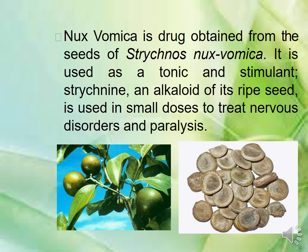Nux vomica is a seed-based drug obtained from the seeds of Strychnos nux-vomica. It is used as a tonic and stimulant. Strychnine, an alkaloid from its ripe seeds, is used in small doses to treat nervous disorders and paralysis.